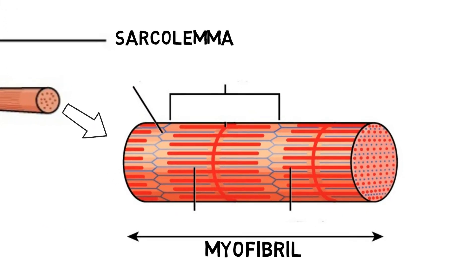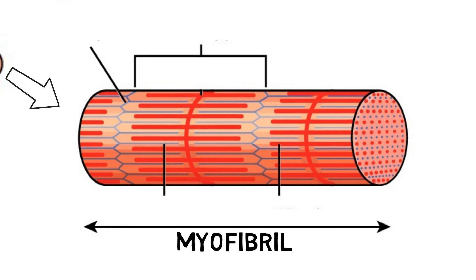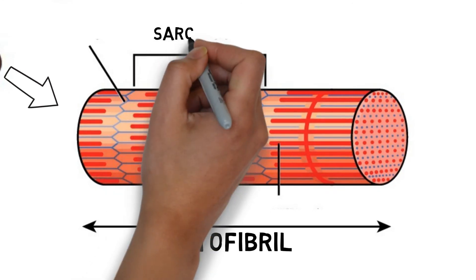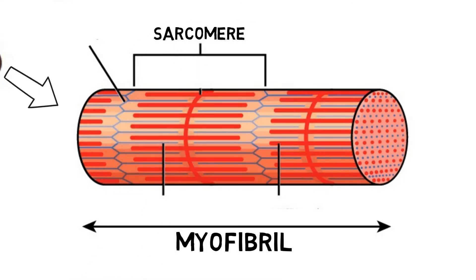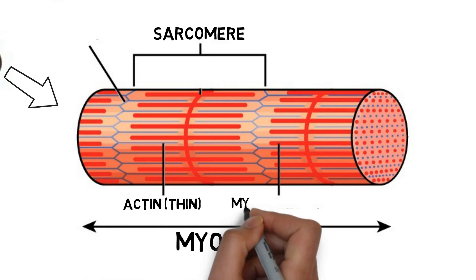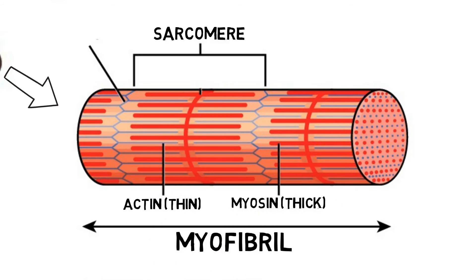The sarcomere is the functional unit of the muscle and is made up of different types of protein filaments: actin, myosin, and titin. These filaments form a number of repeating sections within a myofibril. It is here where the main action happens during the sliding filament theory, a process that produces a muscular contraction.